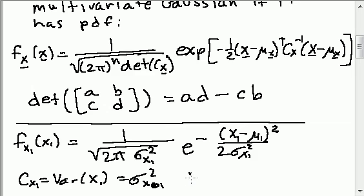And so when I take the determinant of the covariance, it's just the number itself. It's just σ x1 squared. And so when I plug in here, I could replace this with the determinant of Cx.